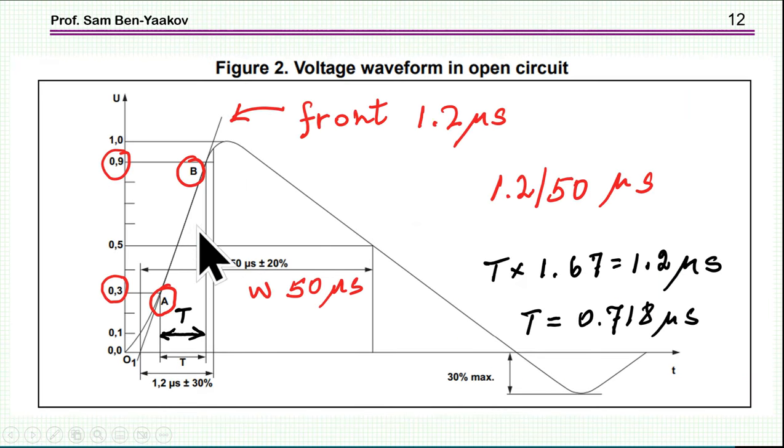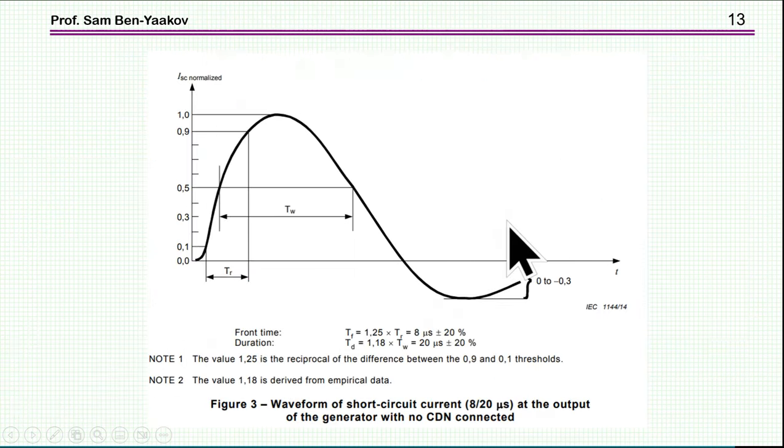Now, as far as the rising part, it's a bit complicated. Well, this was composed by a committee. And they had to complicate it. So there are two numbers here. First of all, 30% and 90% of the final value. And there is a time here between these two points. And then you normalize it to the full time, like as if it was a straight line. And it turns out that this normalization is 1.67. You have to multiply it. So basically, what it says that you have to have here like 0.718 microseconds. So that the total time here will be approximately 1.2 microseconds.